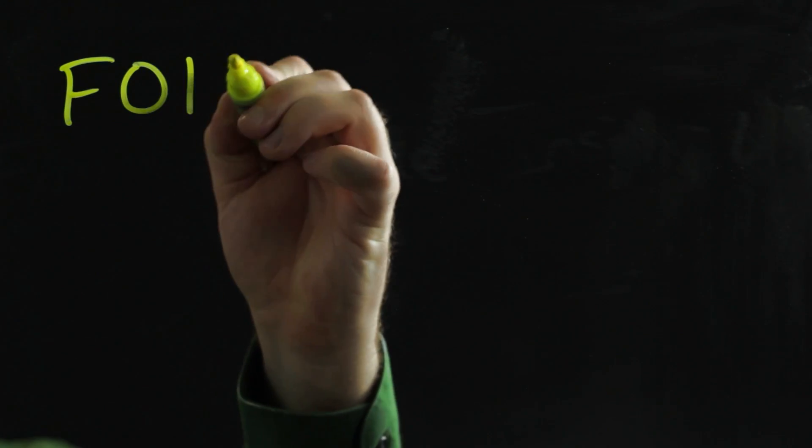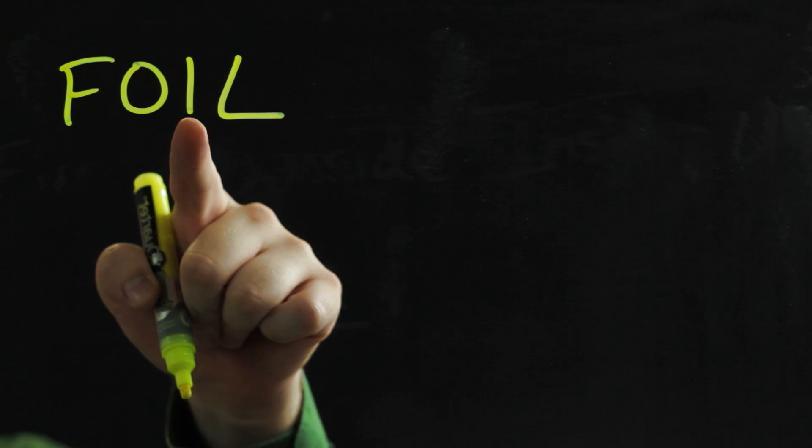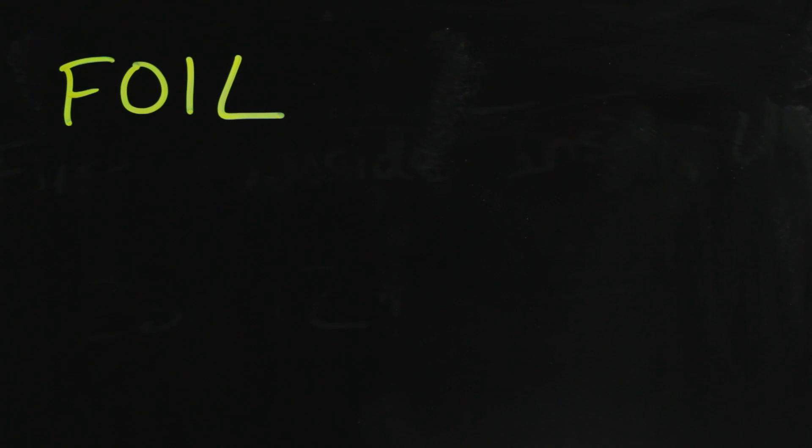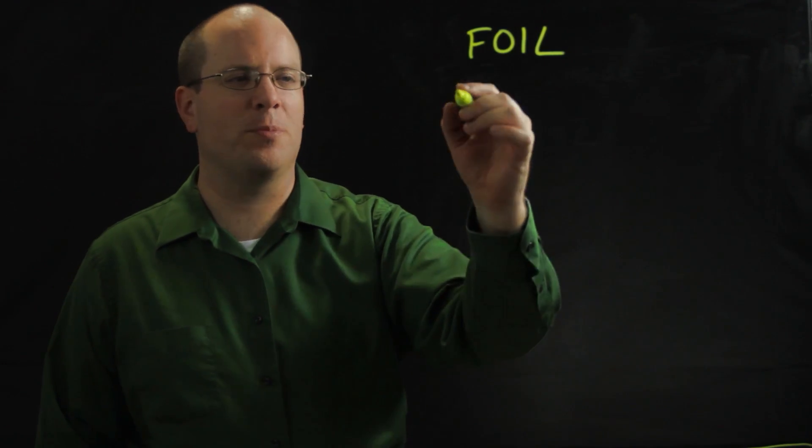FOIL is an acronym that stands for First, Outside, Inside, Last. Let me show you how you'd use that. It's a method of multiplying numbers.